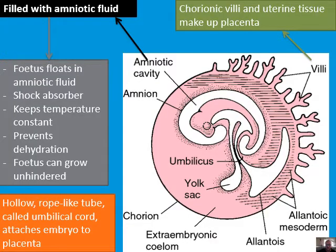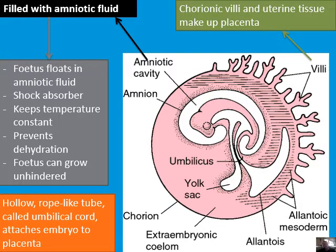The amniotic cavity is filled with amniotic fluid. The fetus floats in the amniotic fluid, which acts as a shock absorber — very important — keeps temperature constant, prevents dehydration, and the fetus can grow unhindered. Because it's floating in fluid, there's no pressure of gravity pushing on anything. The umbilical cord is a hollow rope-like tube that attaches the embryo to the placenta.